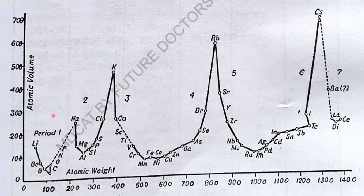At the peak position of the curve, all the alkali metals are placed — Sodium, Potassium, Rubidium, and Cesium. On the ascending curves, the acid elements and halogens are placed.